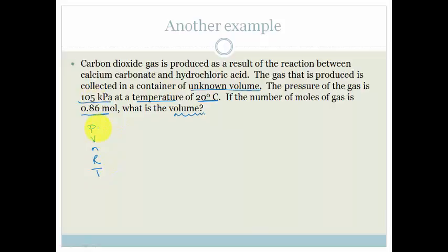This time we know the pressure is 105 kilopascals. The volume is what we want. The number of moles is 0.86. R is still 8.31. And the temperature, in this case, is 20 degrees Celsius. And remember, what do we have to do? We have to convert the pressure and we have to convert the temperature. This one's pretty easy, because we're going from kilopascals to pascals, so we're just going to times it by 1,000. So it's going to be 105,000 pascals. N is fine, R is fine. This, we have to add 273, which becomes 293 Kelvin.